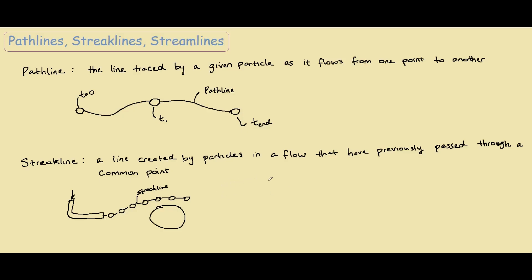However, in unsteady flow, this is slightly different. The particles might move differently — one particle may come and move here, another may move here, and so on. In this case, the particles still originated from some original point, so connecting the particles gives us our streakline. So in steady flow, the streakline and pathline look exactly the same, but for unsteady flow, they look slightly different.